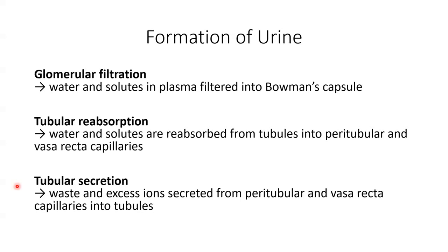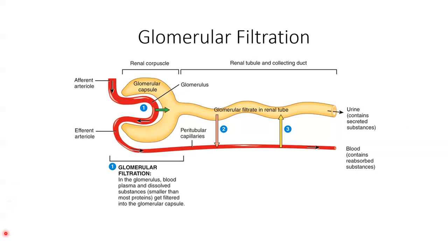If blood flow to the kidneys is reduced and no blood is being filtered, no urine will be produced and no waste will be excreted. The first step in urine formation is glomerular filtration, which occurs in the glomerulus and is the process of blood being filtered through the filtration membrane, so that most of the blood plasma ends up in the Bowman's capsule, with essentially only the blood cells, platelets, and large plasma proteins being left behind in the bloodstream.